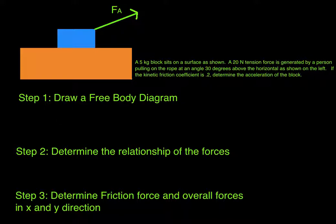From that point, we're just going to draw all the forces that are acting on the box. Let's look at this box here and see what exactly is acting on it. The first force that I can see acting on the box is the one that pretty much acts on everything, and that's gravity. Gravity is always going to act straight down.